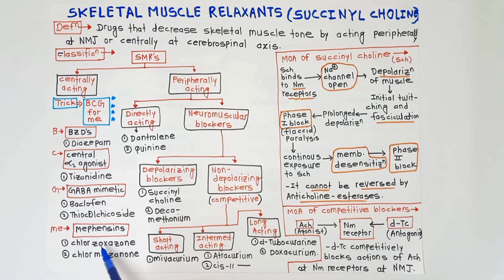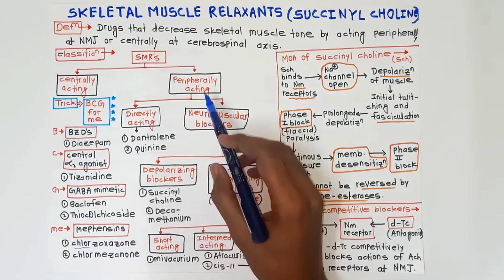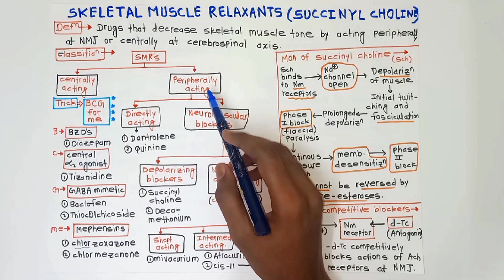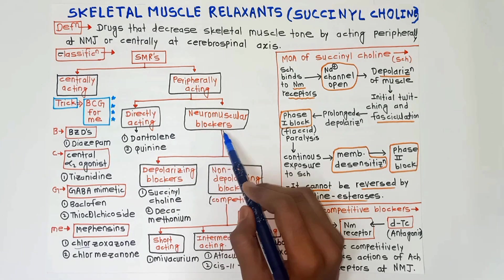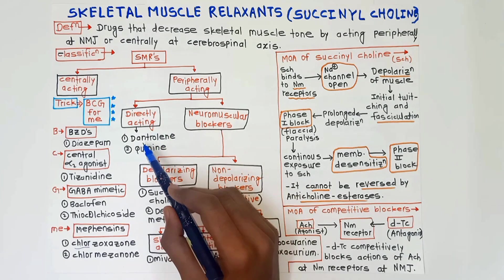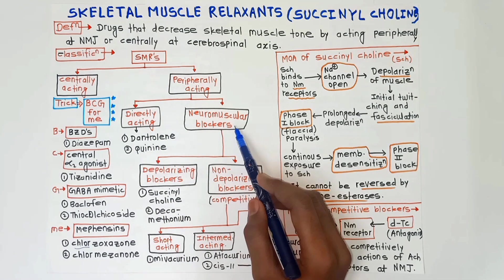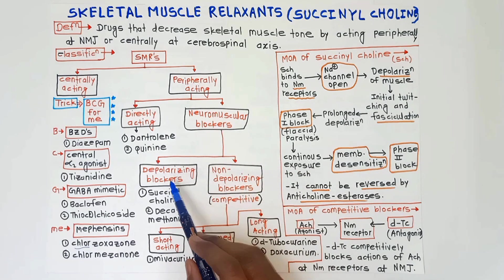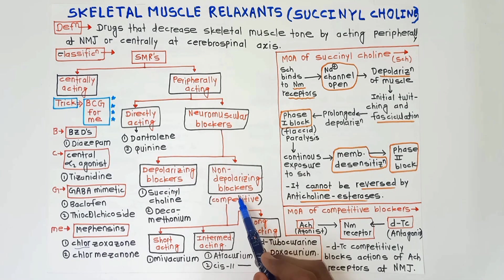Mephensins include chlorzoxazone and chlormezanone — easy to remember because each drug has 'chlor' in it. Next, peripherally acting drugs are divided into two subgroups: directly acting and neuromuscular blockers. Directly acting has only two drugs: dantrolene and quinine. Neuromuscular blockers are further subdivided into depolarizing blockers and non-depolarizing blockers.